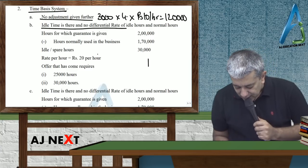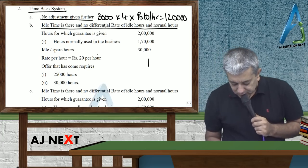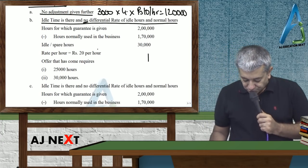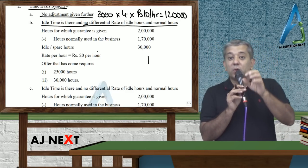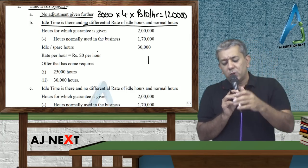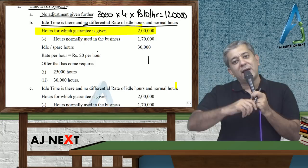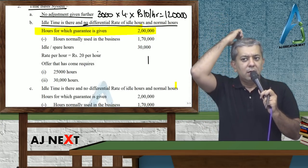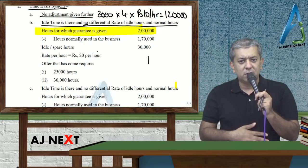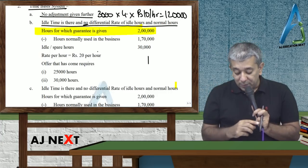Idle time is there and no differential rate of idle hours and normal hours. I'll explain in two minutes. Listen, we gave workers a guarantee that brother, whatever happens, we are giving you a guarantee for 2 lakh hours, that you will get 2 lakh hours of work. But if 2 lakh hours of work doesn't come, we will pay you for 2 lakh hours. Workers clapped.